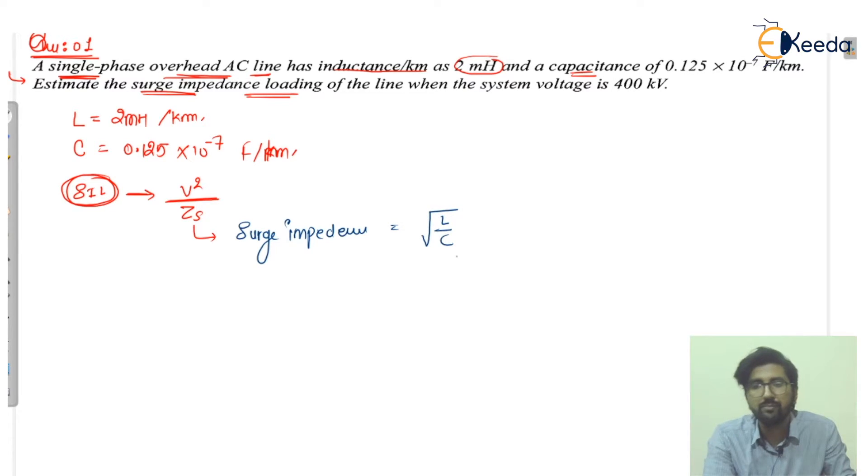This type of numericals we have already studied in the AC systems, in the transmission and distribution of AC systems. Surge impedance is actually L by C. The value of L is 2 into 10 raised to power minus 3.